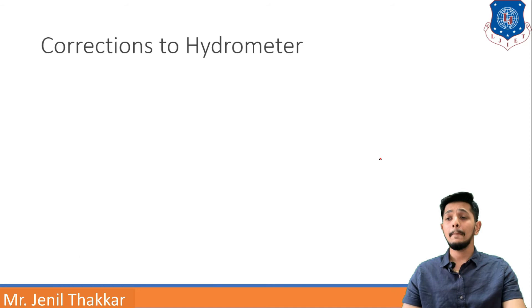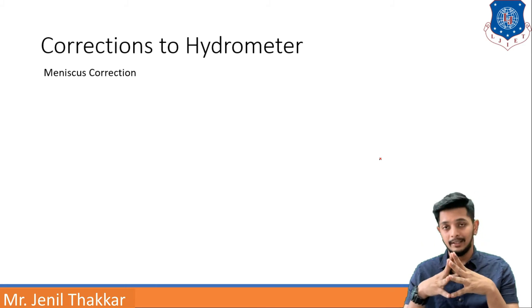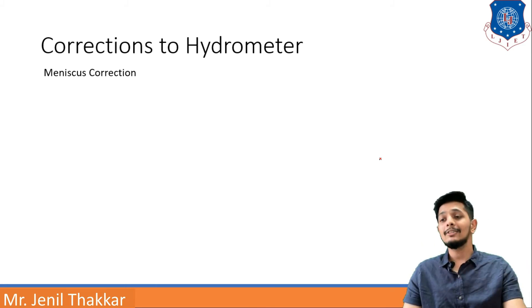Moving forward correction to hydrometers. Now hydrometer method will be used for sedimentation analysis. Hydrometer method has some corrections. Let us discuss these corrections. First correction is meniscus correction. Meniscus correction is written by C subscript m. Meniscus correction is always positive correction.